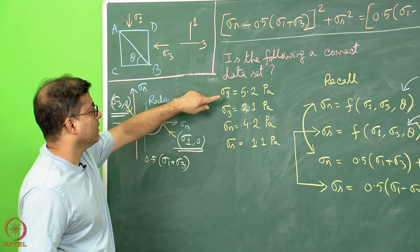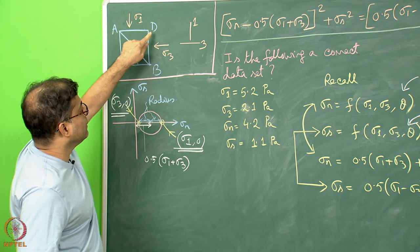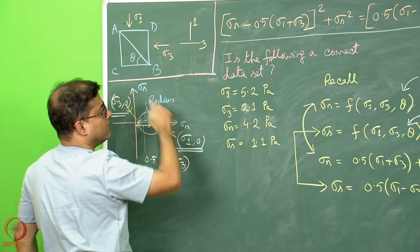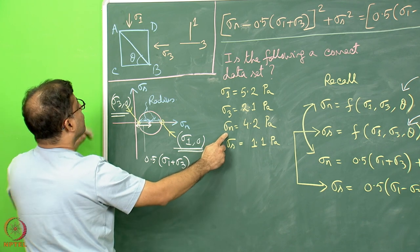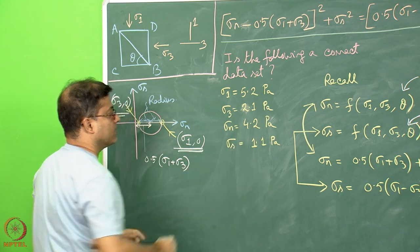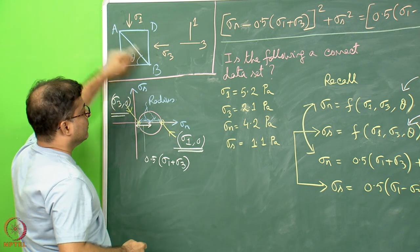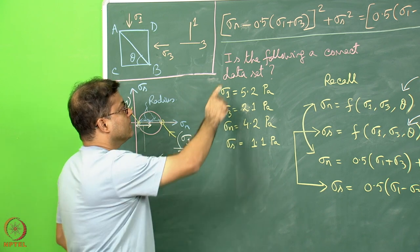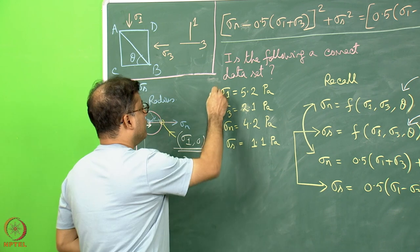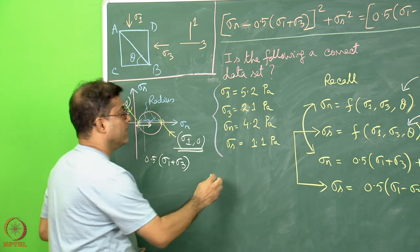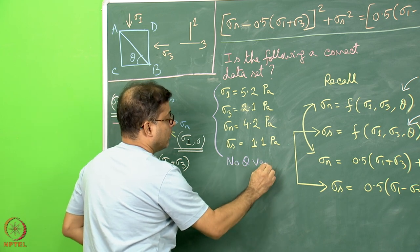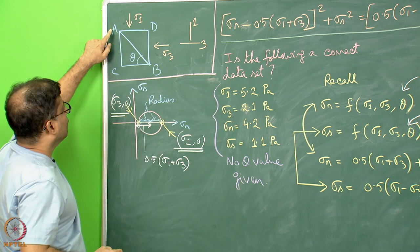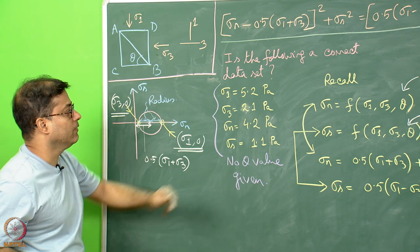Consider this problem: sigma 1, the normal stress on the AD line, is 5.2 Pascal; sigma 3 acting on the BD line is 2.1 Pascal; the normal stress sigma N acting on the AB line is 4.2 Pascal; and the shear stress sigma S acting on the AB plane is 1.1 Pascal. The question is: is this a correct data set? Is it physically possible to have such data? Note that no theta value is given.